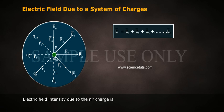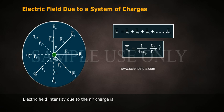Electric field intensity due to the nth charge is En bar is equal to 1 by 4 pi epsilon naught Qn by Rn square R cap.